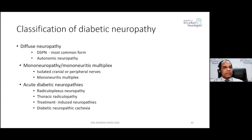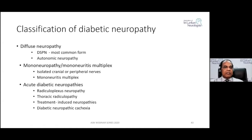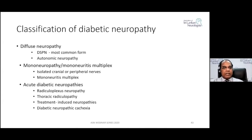The second diffuse type is diabetic autonomic neuropathy. For focal neuropathy, it may be mononeuropathy or mononeuropathy multiplex — isolated cranial nerves or isolated peripheral nerve problems, or multiple asymmetric nerves involved. Diabetes also presents with acute neuropathies like radiculoplexus neuropathy, thoracic radiculopathy, treatment-induced neuropathy, and diabetic neuropathy cachexia. Diffuse neuropathy usually develops in long-standing diabetic patients and is a chronic condition.